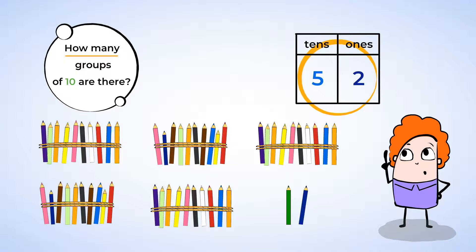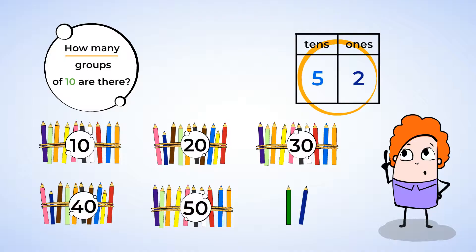But let's check. First, we count the 10s. Because each group has 10 colored pencils, we should count by 10s. 10, 20, 30, 40, 50. Now we count by 1s. 51, 52. Yeah, you have 52 colored pencils.